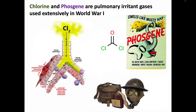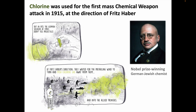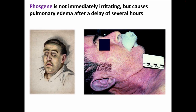Chlorine and phosgene are pulmonary irritant gases, also covered elsewhere in this series, and they were used extensively in World War I. These gases cause a concentration and time-of-exposure dependent injury to the lungs and mucous membranes, potentially leading to pulmonary edema. Chlorine gas was used for the first mass chemical weapons attack in 1915 at the direction of famed chemist Fritz Haber — another dark historical chapter. He won the Nobel Prize for creating the Haber process of fixing nitrogen to generate fertilizer, but was also responsible for planning and carrying out poison gas attacks, and even helped develop Zyklon B — which was probably used to kill some of his relatives since he was a German Jew. Phosgene is not immediately irritating like chlorine, and was reported to have a not entirely unpleasant smell of newly mown hay or green corn, so exposed soldiers might breathe in more before they were aware of it, and the pulmonary injury would be more delayed.